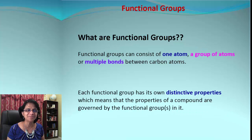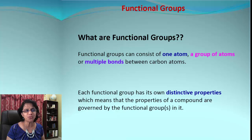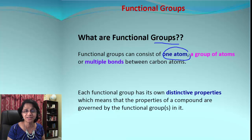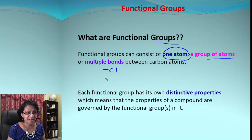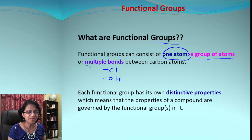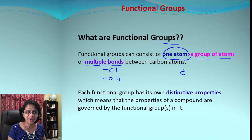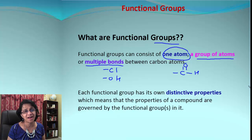First of all, what do we mean by functional groups? Even though we use the word 'groups,' a functional group could be one single atom — like Cl, which becomes the chloro group — or we can have a group of atoms like OH, which is the hydroxide or alcohol group, or we can even have multiple bonds present, for example C double bond O and H, which is an aldehyde group.